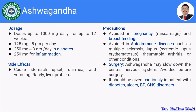Precautions when consuming Ashwagandha: it should be avoided during pregnancy and breastfeeding as there may be a risk of miscarriage. It should be avoided in autoimmune diseases such as multiple sclerosis, lupus (systemic lupus erythematosus), rheumatoid arthritis, and other immune system conditions. It should be avoided before surgery because it slows down the central nervous system. It should be given cautiously in patients with diabetes, ulcers, blood pressure issues, and central nervous system disorders.